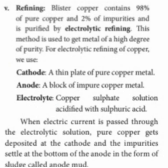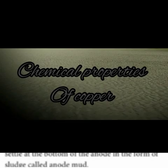In electrolytic refining, the cathode is a thin plate of pure copper, the anode is a block of impure copper, and the electrolyte is a copper sulfate solution acidified with dilute sulfuric acid. This gives 100% pure copper. The complete extraction process involves: concentration, roasting, smelting, Bessemerization, and electrolytic refining. Important exam questions include the Bessemerization process, electrolytic refining, ores of copper, and the full extraction of copper from copper pyrite.